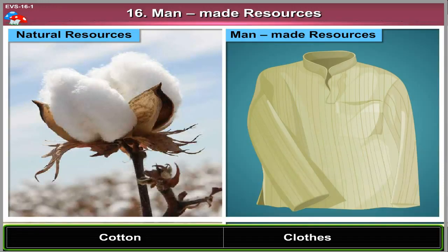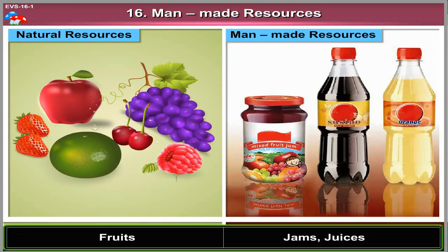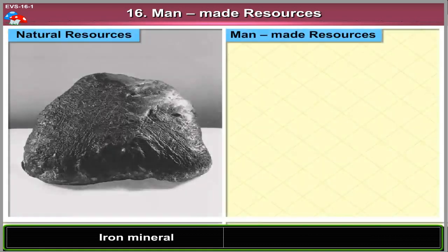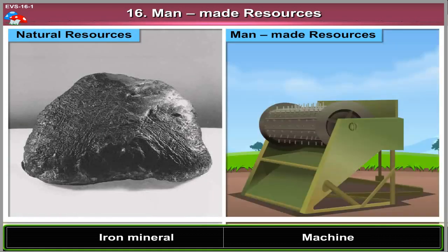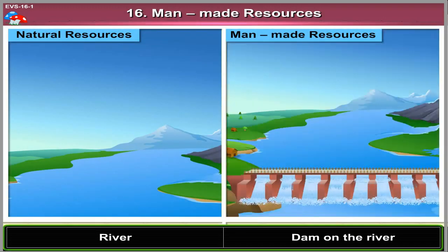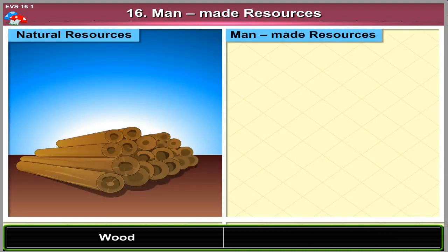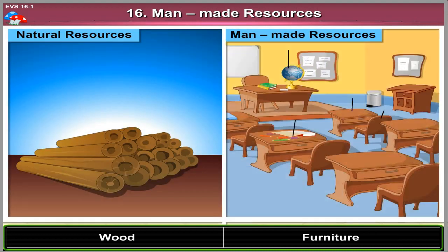From fruits, jams and juices. From iron mineral, machines. From the river, man has made dams. From wood, furniture.